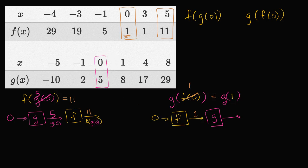What is g of one? When I input one into our function g, I get g of one is equal to eight. So this is equal to eight, and we're done. Notice these are different values because these are different composite functions: f of g of zero is 11, and g of f of zero is 8.